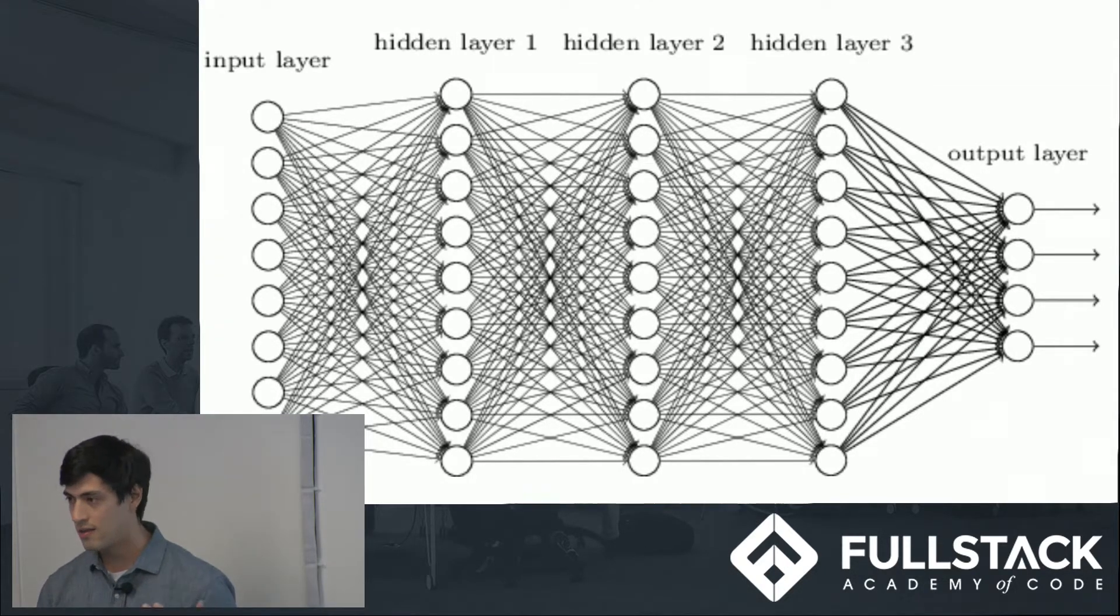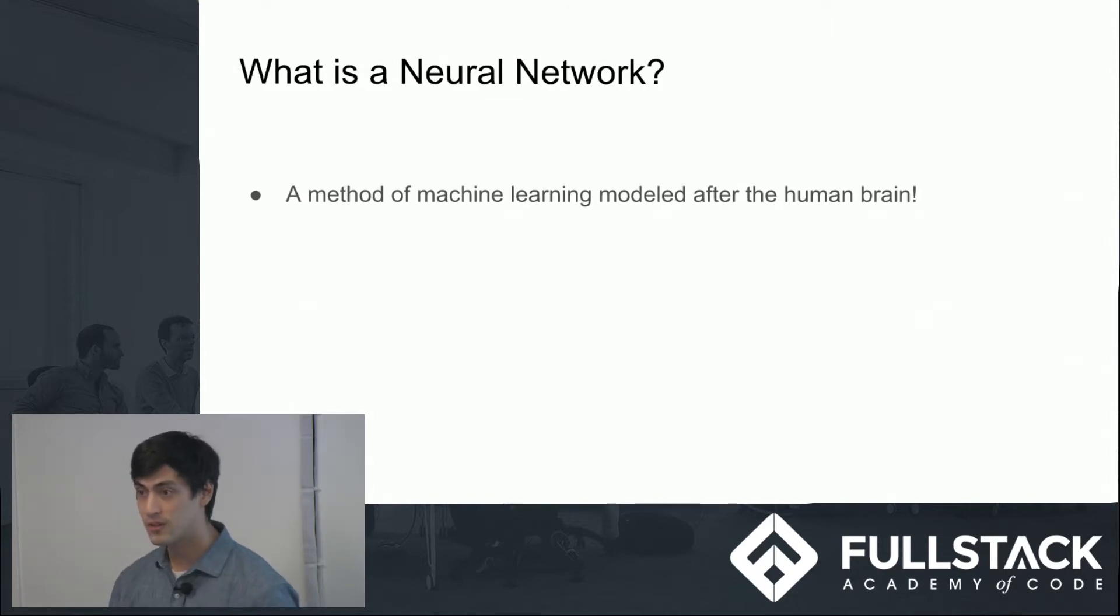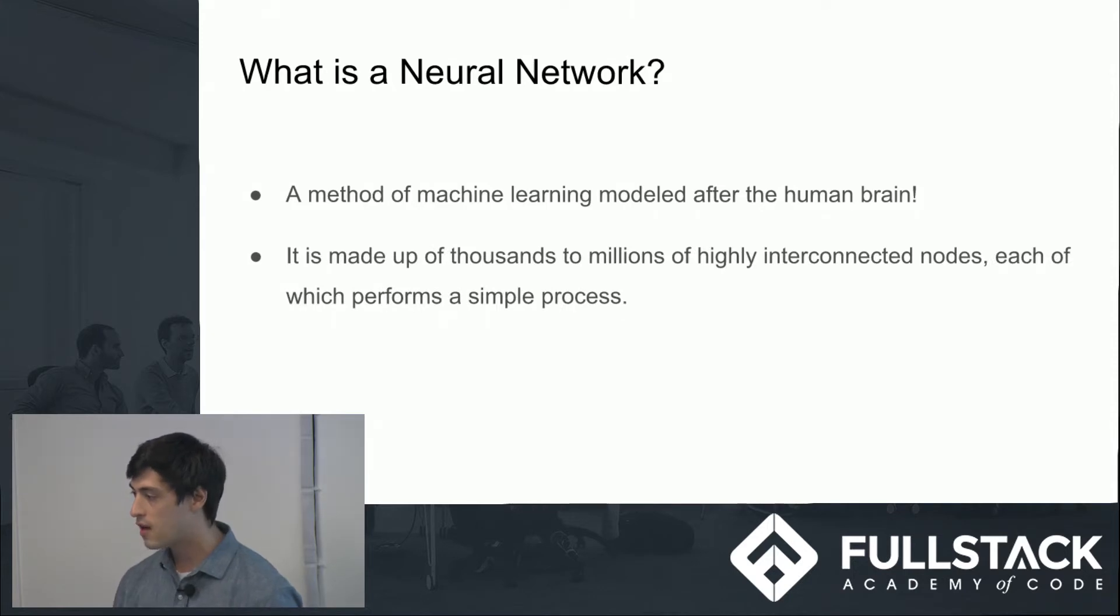Now, a conventional application of neural networks. What are they? A type of machine learning modeled after the human brain. They're made up of many nodes, thousands or maybe even millions of highly interconnected nodes, each of which is performing a simple process. And we'll get to what that process is in just a bit, but first that example I was leading into.